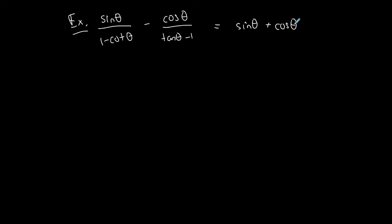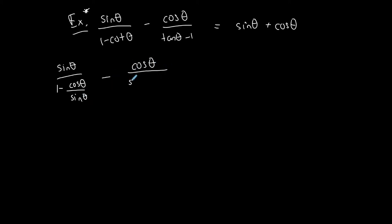So: sinθ over (1 minus cotθ), minus cosθ over (tanθ minus 1), is equal to sinθ plus cosθ. I'm definitely going to choose the left side. I recognize there's a cotangent and a tangent, so I'm going to convert them into sines and cosines first. That gives me sinθ over (1 minus cosθ/sinθ), minus cosθ over (sinθ/cosθ minus 1), equal to sinθ plus cosθ.